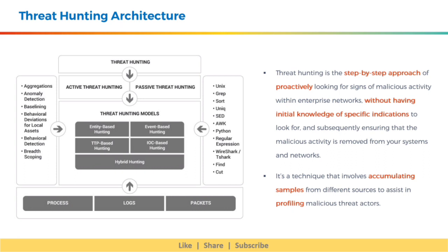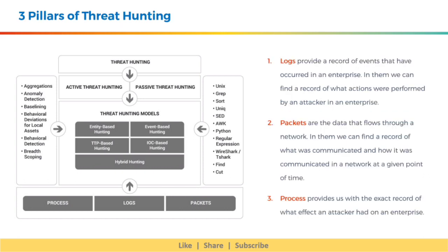Threat hunting can be either active or passive. It has four models and is supported by three pillars at the bottom: logs, packets, and process. Logs provide a record of events that have occurred in an enterprise — in them we can find a record of what actions were performed by an attacker. Packets are the data that flows through a network, recording what was communicated and how it was communicated at a given point of time. Process provides us with the exact record of what effect an attacker had on an enterprise.